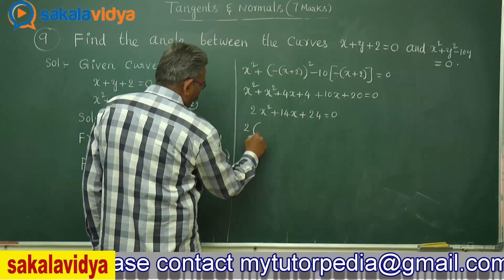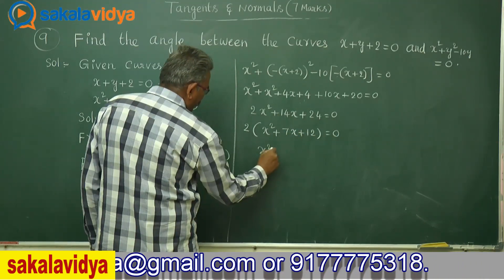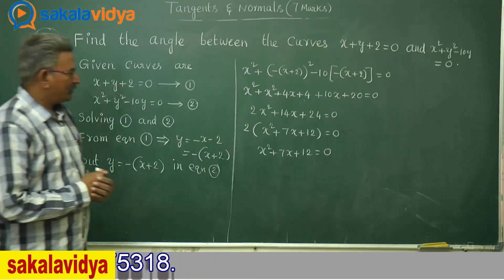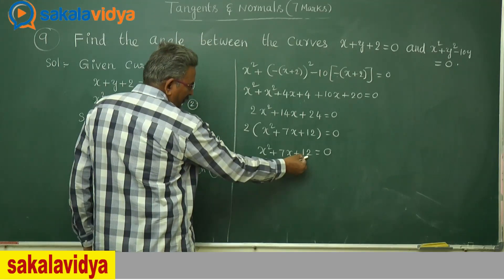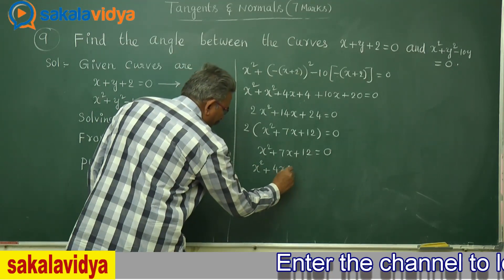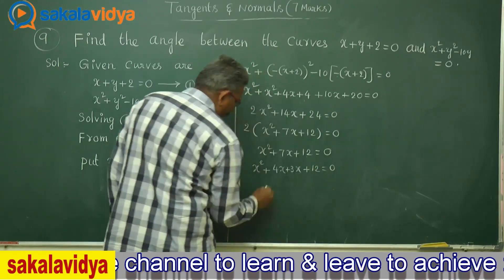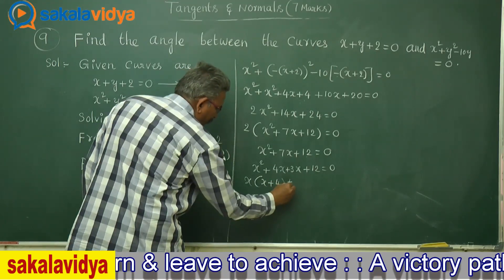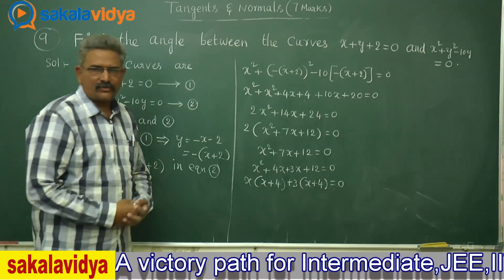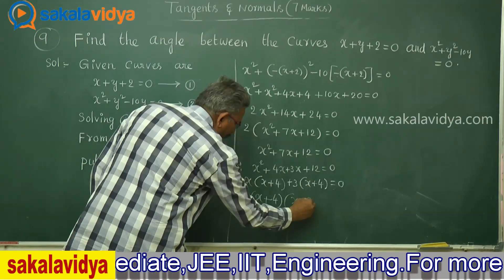Taking 2 out, we get x square plus 7x plus 12 is equal to 0. Now we solve it using factorization: 4 times 3 is 12, and 4 plus 3 is 7. So we write x square plus 4x plus 3x plus 12 equals to 0. Taking x common gives x into x plus 4, plus 3 into x plus 4. So x plus 4 into x plus 3 equals to 0.